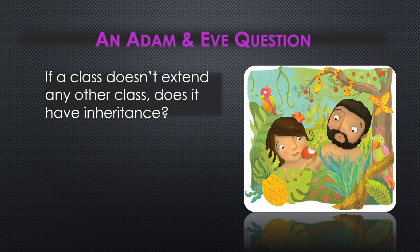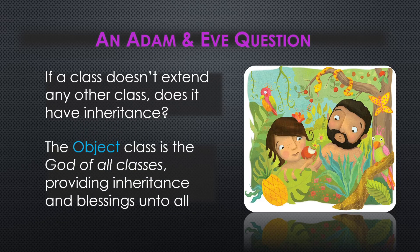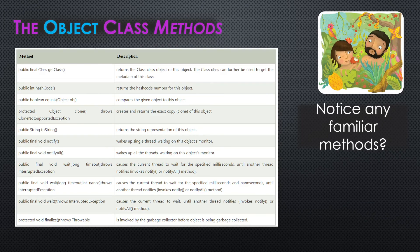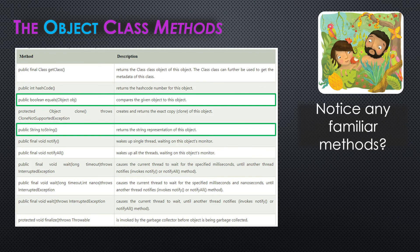If a class doesn't extend another class, does it have inheritance? Yes, it does. The Object class is actually the top-level class in Java. It defines certain methods which you're probably familiar with using. Object class methods are inherited by other classes — it's part of the java.lang package. The equals and toString methods are actually defined in the Object class. But other classes like String may do their own version of these methods. Even when you write your own classes, you can override these methods and do your own versions — but they are inherited from the Object class initially.